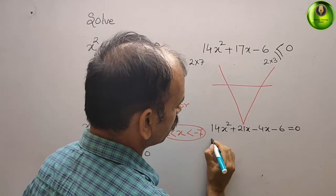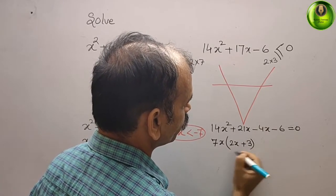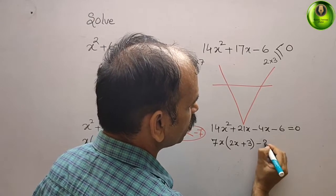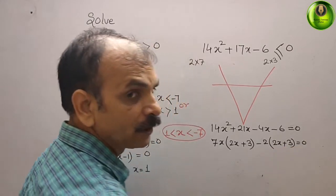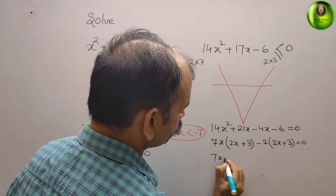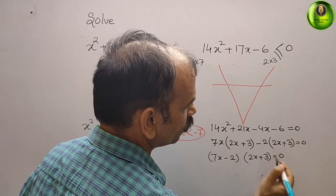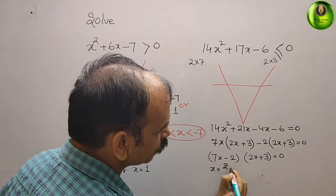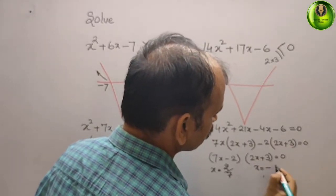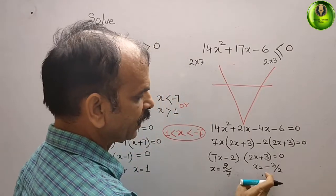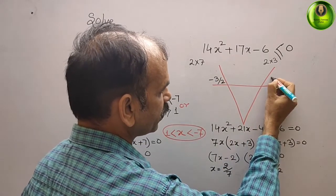Factoring: 7x is common in the first pair, giving 7x(2x + 3), and -2 is common in the second pair, giving -2(2x + 3). So (7x - 2)(2x + 3) = 0, which means x = 2/7 or x = -3/2. Since -3/2 is negative, it goes on the left side of the number line, and 2/7 (positive) goes on the right.